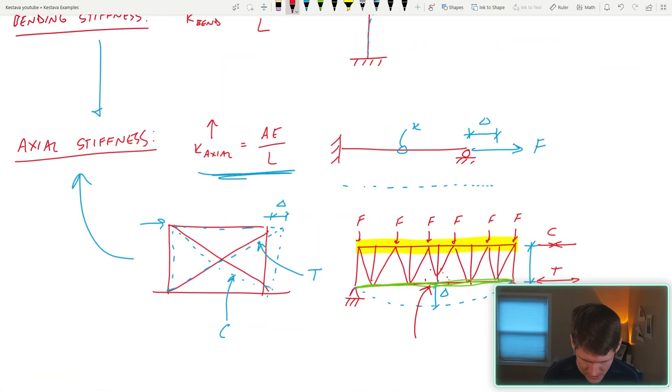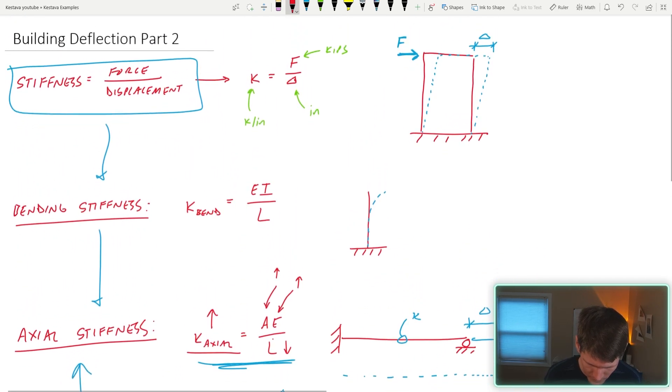If you want to increase your axial stiffness, then you can do that by either increasing your cross sectional area or increasing your modulus of elasticity. So basically, you need to change the material property of your member, or we can increase A or increase E, or we can decrease the length of your member. And we would want to increase our stiffness of our system in order to decrease the overall displacement of our system. We want to keep that thing nice and rigid, and we don't want it moving too much.